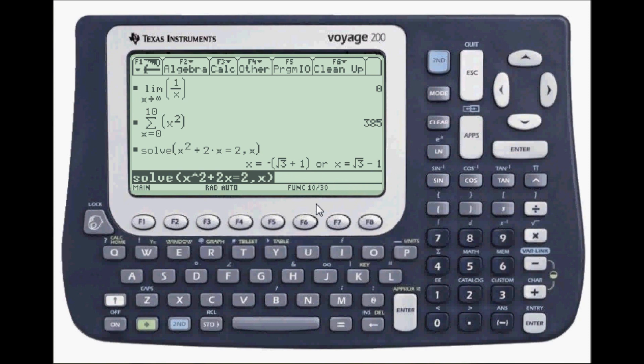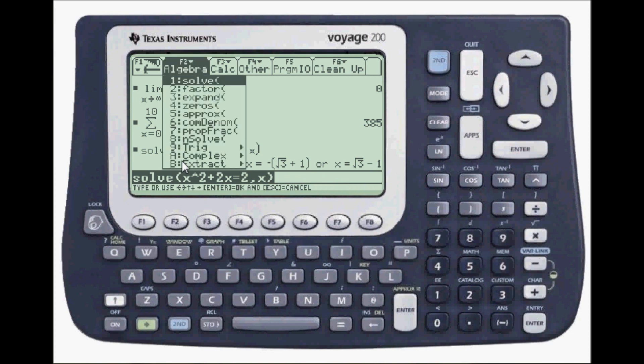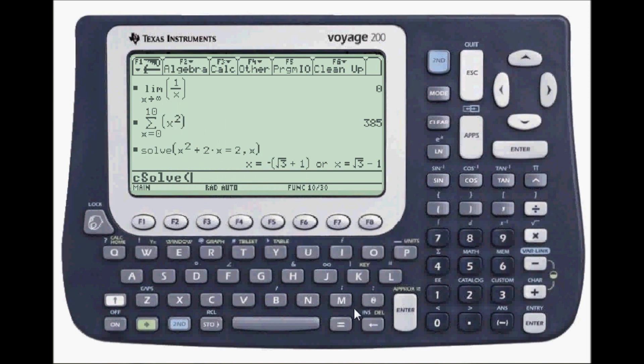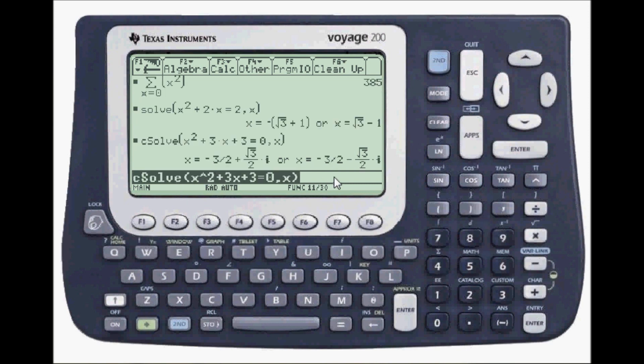Now, if you have complex roots, you can take care of that as well. Go to F2. Complex. And here are the two complex roots. A C solve is number one. So something with complex roots would be x squared, plus three x, plus three, equals zero variable x. Close parenthesis. Enter. And here are your two complex roots.